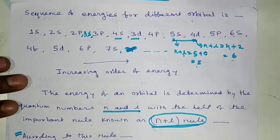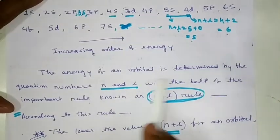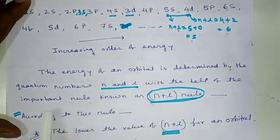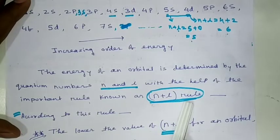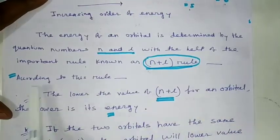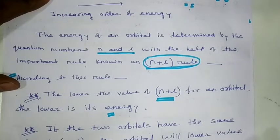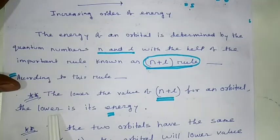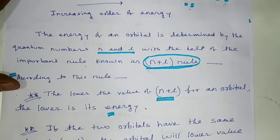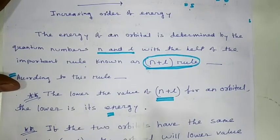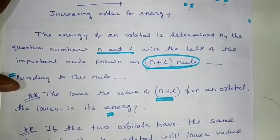The energy of an orbital is determined by the quantum numbers N and L with the help of the important rule known as the N plus L rule. According to this rule, the lower the value of N plus L for an orbital, the lower is its energy.